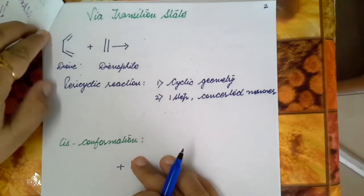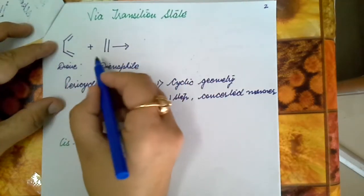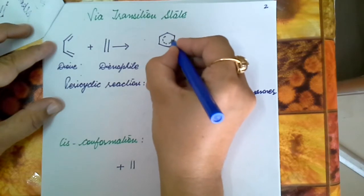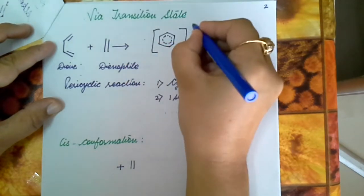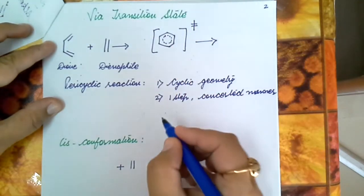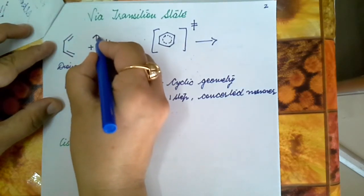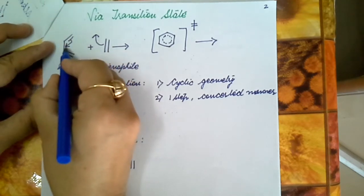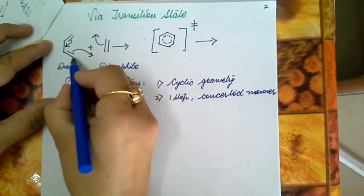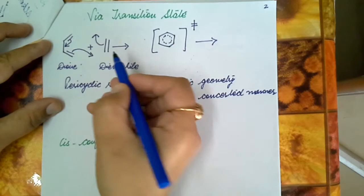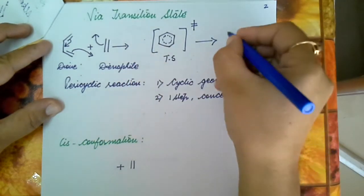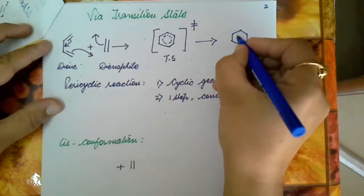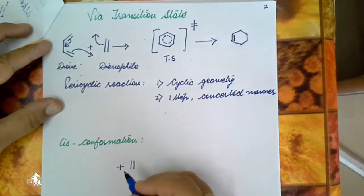The Diels-Alder reaction takes place via a transition state. When the diene and dienophile react with each other, there is an involvement of a cyclic transition state. The electrons move to form a bond between the terminal carbon atoms, these electrons shift to form the double bond, and ultimately electrons shift between the two carbon atoms forming a new sigma bond. There is formation of the transition state, which leads to the formation of the cyclic adduct, and the double bond now appears in the ring.